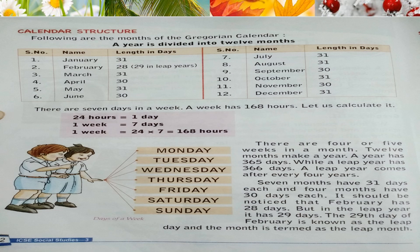Students, let us revise the days of the week once more. They are Monday, Tuesday, Wednesday, Thursday, Friday, Saturday and Sunday. There are 4 or 5 weeks in a month. 12 months make a year. A year has 365 days, while a leap year has 366 days. In a leap year, February has 29 days, so the total becomes 366 days. A leap year comes after every 4 years.